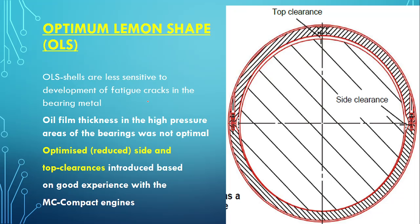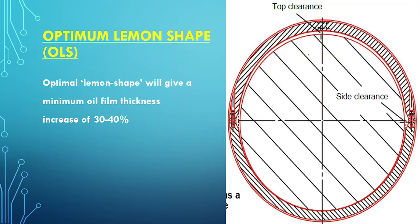This design is less sensitive to the fatigue crack of the bearing metal. What improvement has been done? This is the side clearance and this is the top clearance. The side clearance is reduced, and the top clearance is introduced, which basically increases the oil film thickness and hence helps the bearing to be less sensitive towards fatigue cracking by improving the edge loading. These are the two improvements which are done in the lemon shape design.